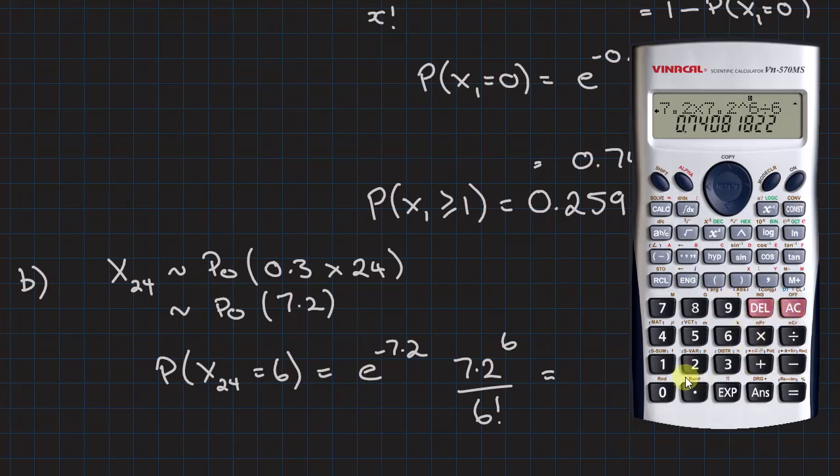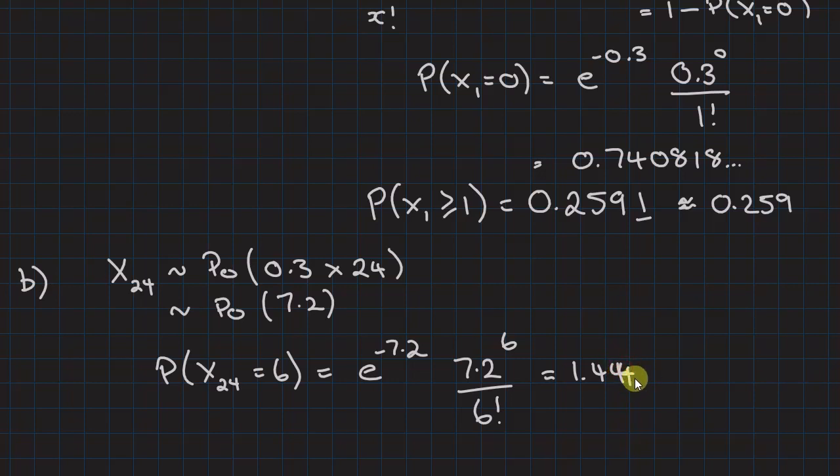That gives me the answer 0.1445. A suitable accuracy, since all their probabilities show 4 significant figures, it allows for some rounding.